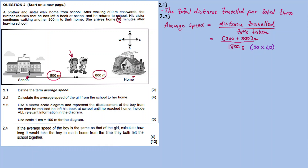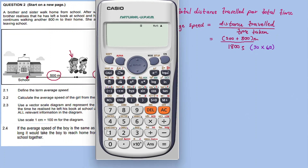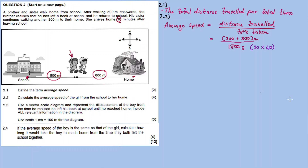So the distance: 500 plus 800 divided by 1800 equals 0.72 meters per second — to two decimal places, the answer is 0.72 m/s. No direction — average speed is a scalar quantity, so there is no direction. Only a vector has a direction.